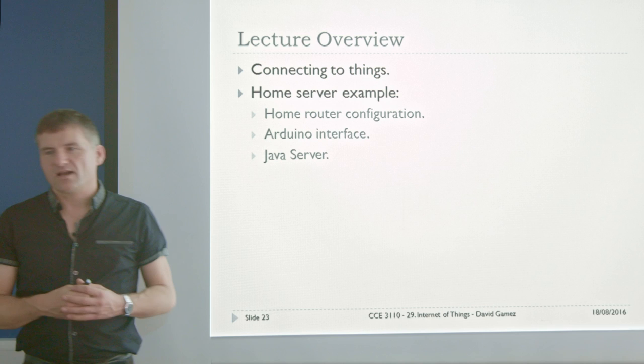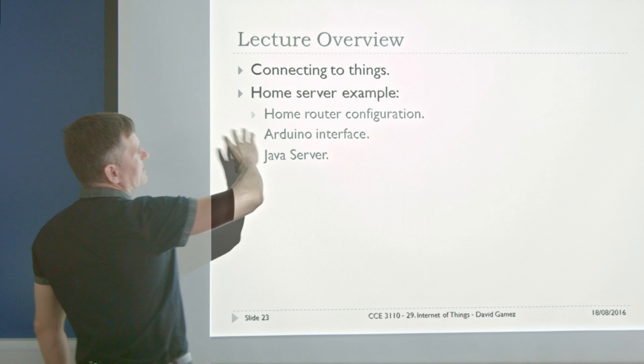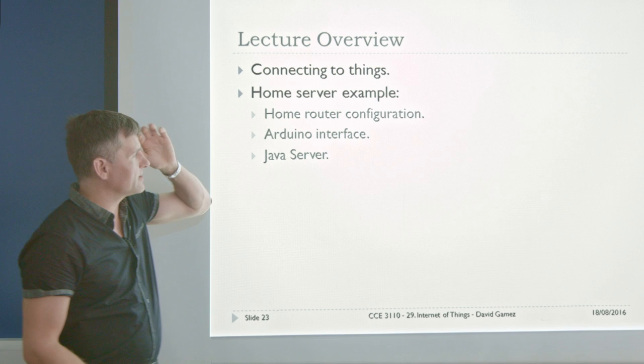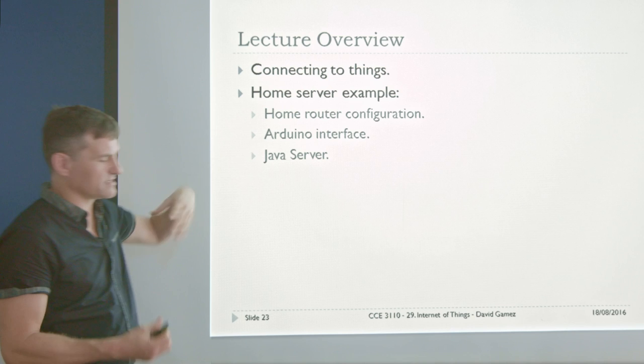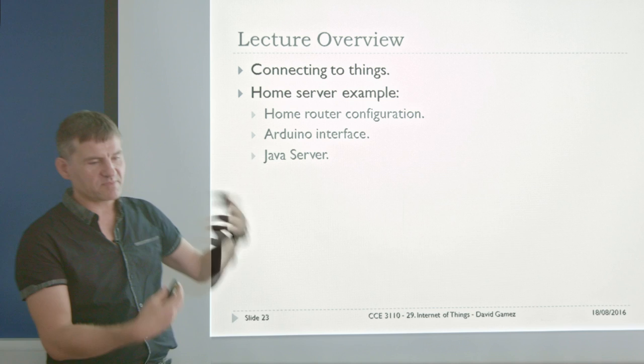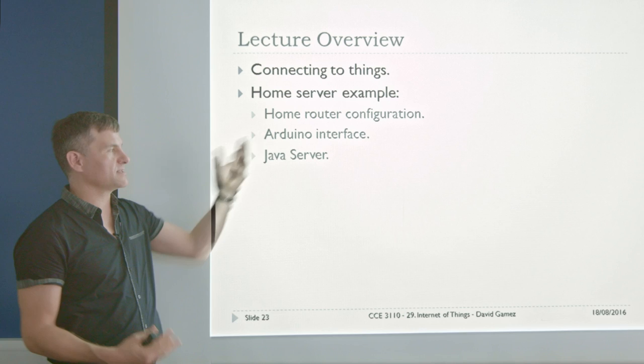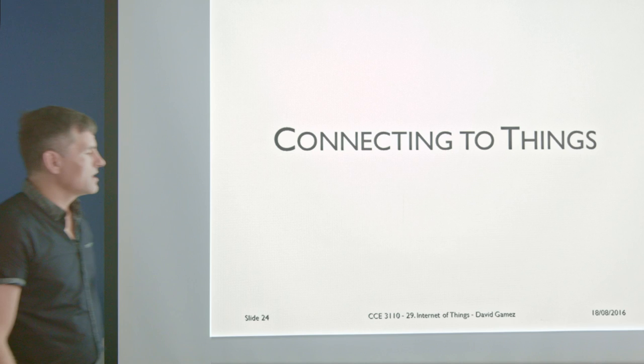So I've set out a bit about the Internet of Things, what's going on there and where it's going. Now I'm going to talk about the network side — how you connect to things and control things remotely. Then I'm going to make it all concrete with a home server example: how you can configure a home router to run a server at home, and write a simple web page that lets you switch an LED on and off and monitor temperature and light levels in your home.